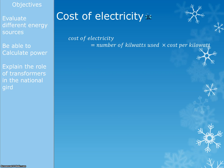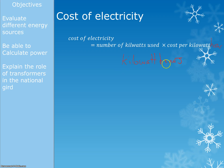The kilowatt hour is used to charge you for your electricity. If you're asked how much it costs to use a device, you need to know how many kilowatt hours were used. The cost equals the number of kilowatt hours times the cost per kilowatt hour. That's the mistake everyone makes — forgetting it should be kilowatt hours, not just kilowatts. Learn from that and don't make it yourselves.